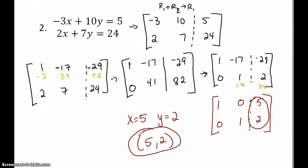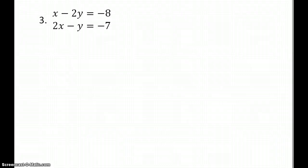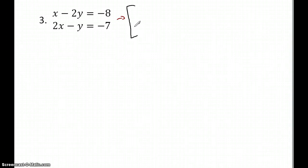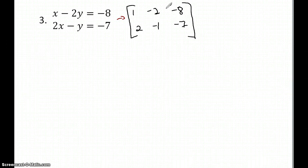I've got one last one for you. If you think that you got it, go ahead and stop the video, or you could try one more as practice. So here's the next one. I'm going to turn this into an augmented matrix: one, negative two, negative eight, two, negative one, negative seven. It looks like this is already a one, so we're good.